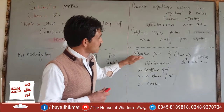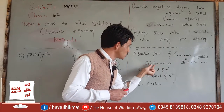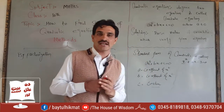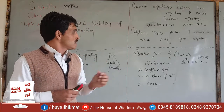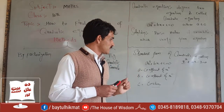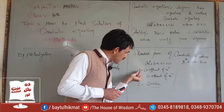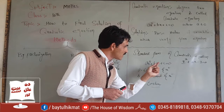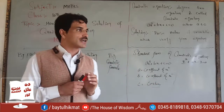The standard form of the quadratic equation is: ax squared plus bx plus c equals zero. This is the standard or general form of a quadratic equation. Here, a is the x squared coefficient, b is the x coefficient, and c is a constant number.